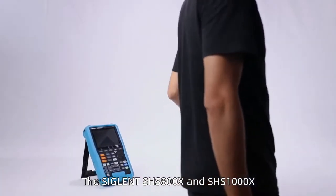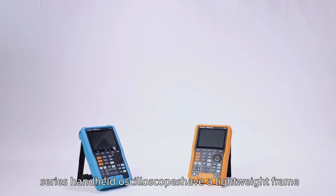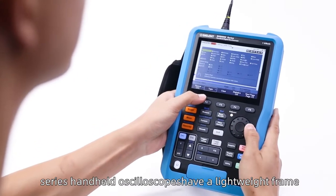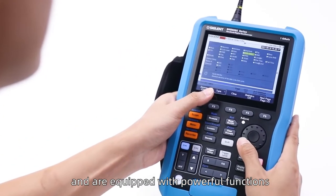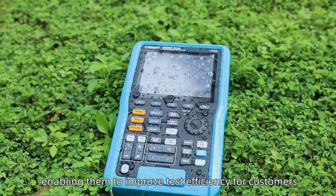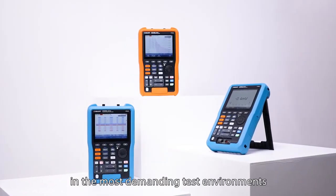The Siglent SHS800X and SHS1000X series handheld oscilloscopes have a lightweight frame and are equipped with powerful functions, enabling them to improve test efficiency for customers in the most demanding test environments.